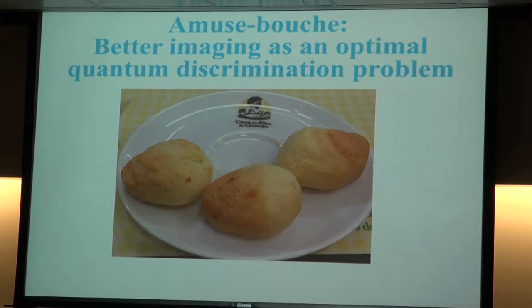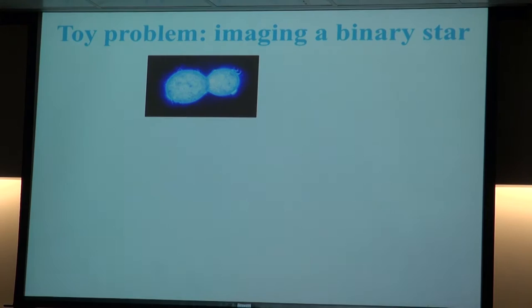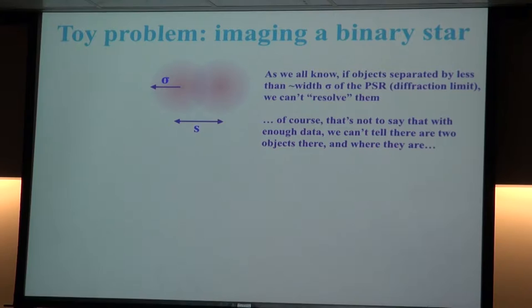For the appetizer: better imaging as a quantum state discrimination problem. Let us think of a toy problem — imaging for idiots. Suppose we have two objects, like a binary star, and we want to get some information about them — really just two point sources. The question is: how well can we tell that there are two point sources, or how far apart they are? If there's some width to our point spread function — the resolution of our telescope or microscope — then we can't resolve things separated by less than the width of that distribution. That's the Rayleigh criteria.